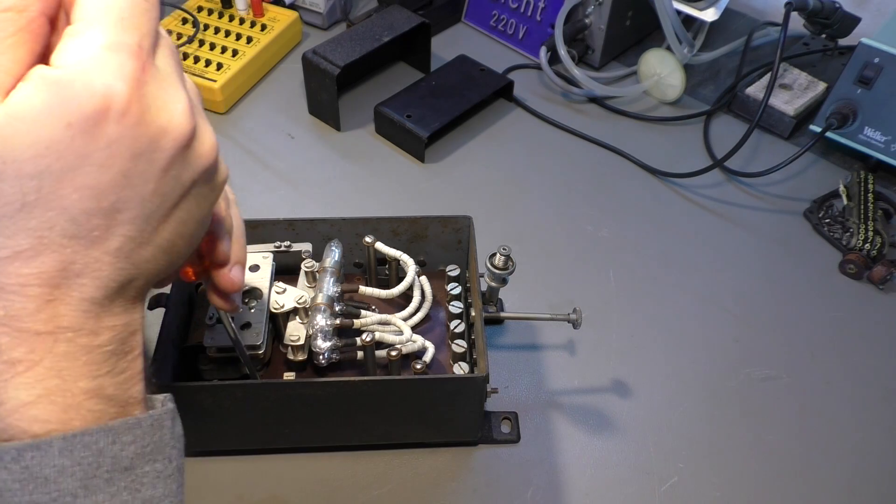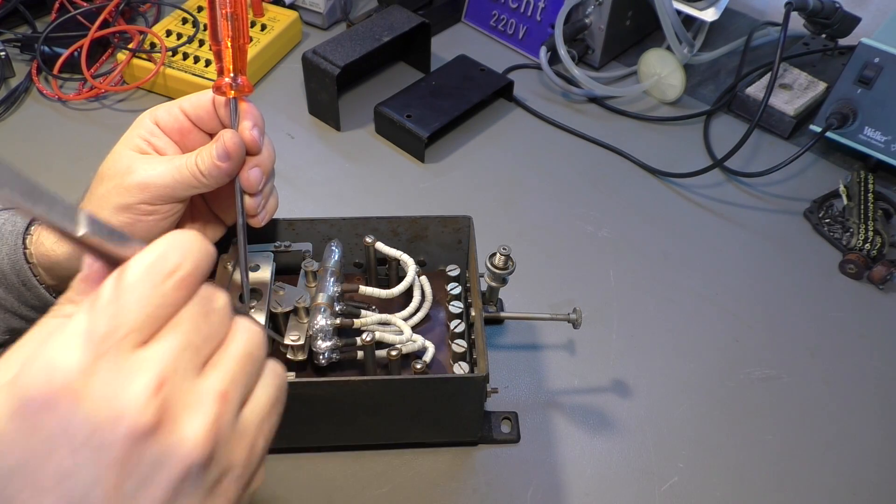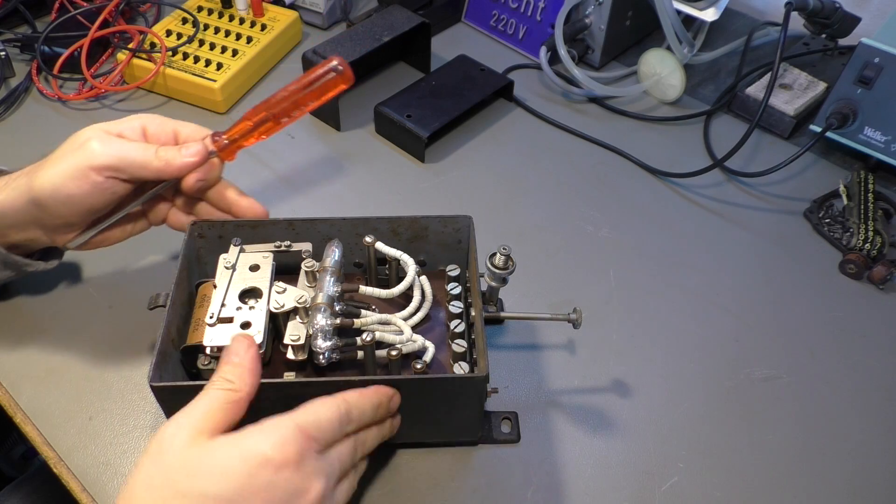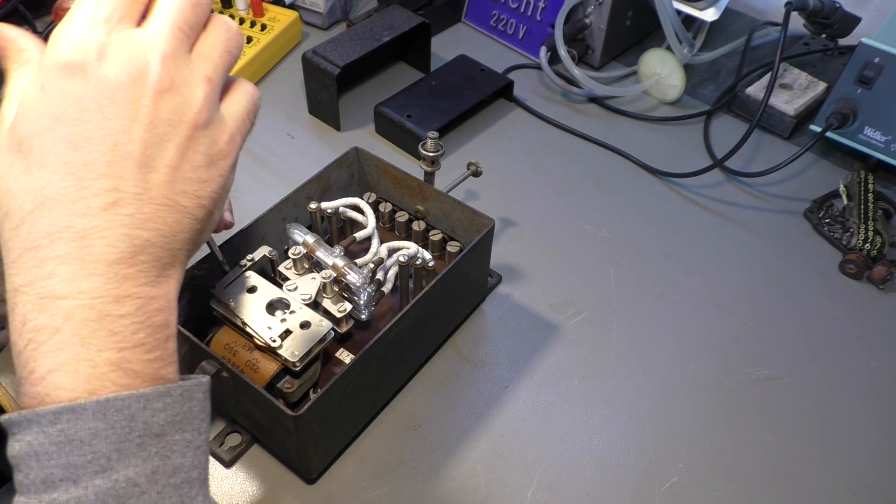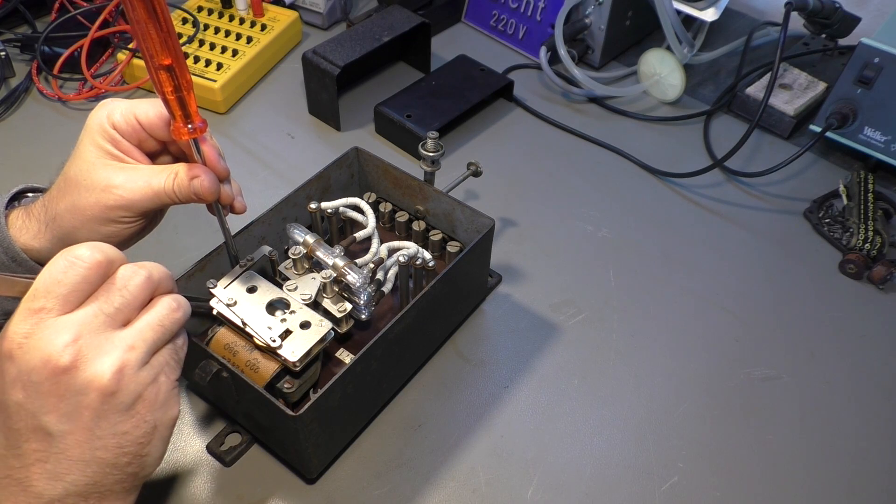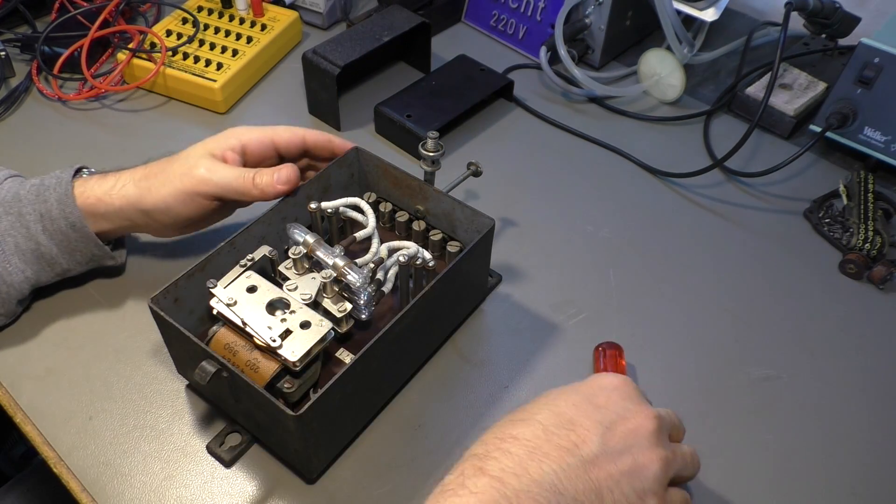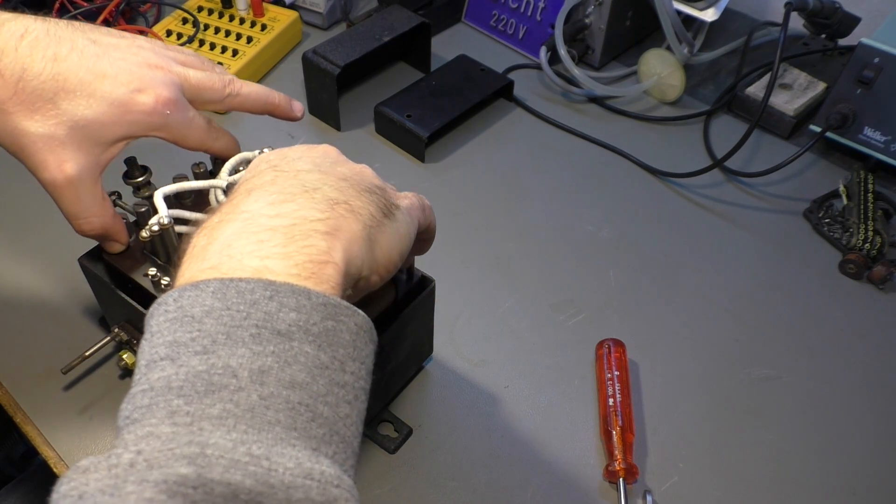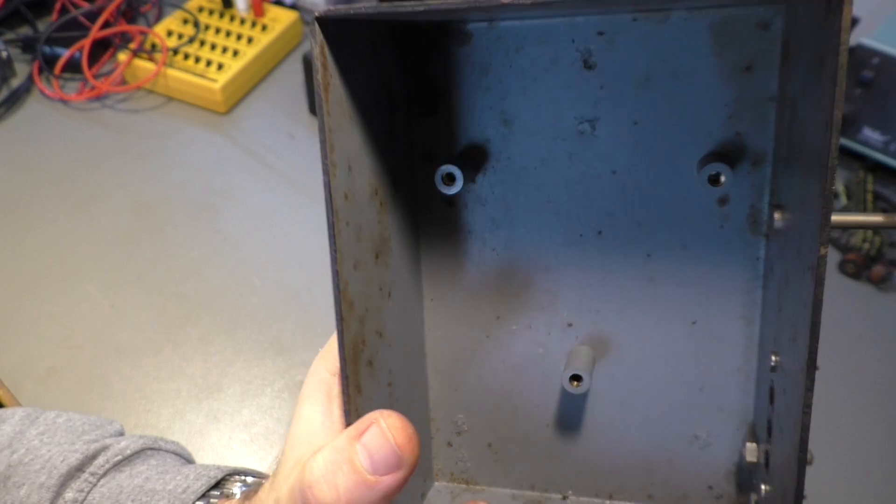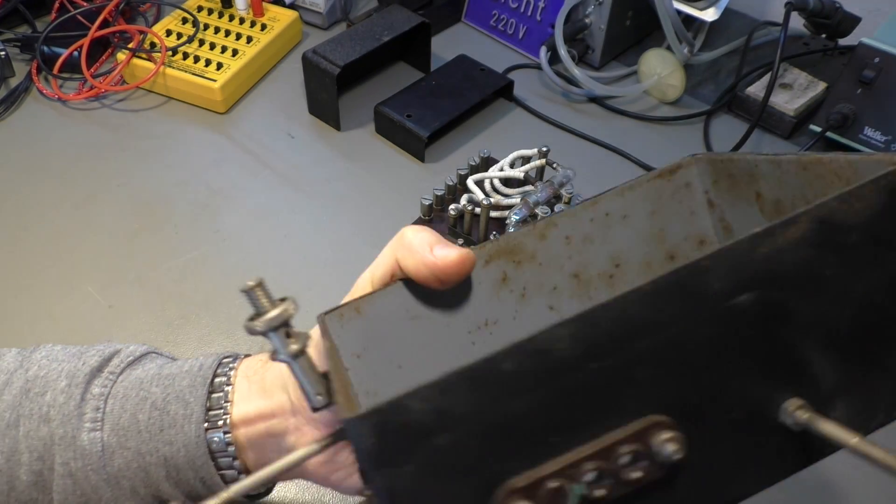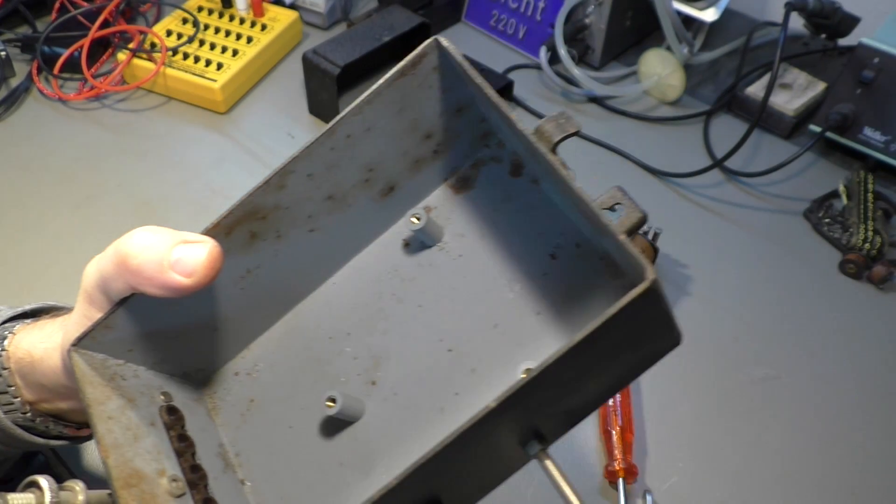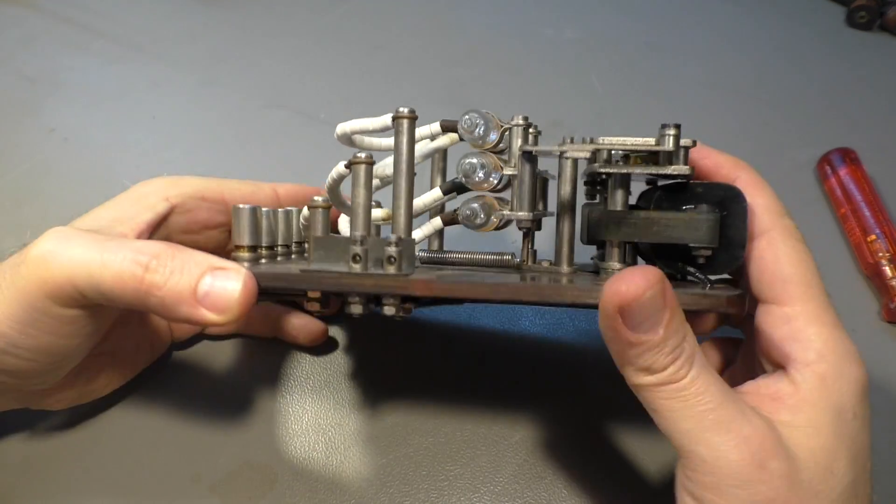There are two screws here, they are not magnetic, maybe stainless steel, maybe brass. That was quite often used in these old devices. No more screws. The good thing is everything comes out because here we only have insulating material. That's only an insulator for the cable throughput here. Let's see the other side.